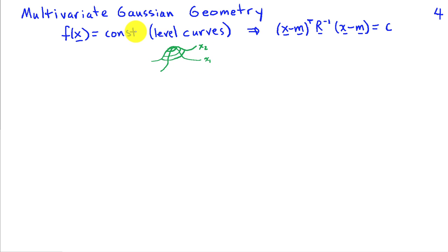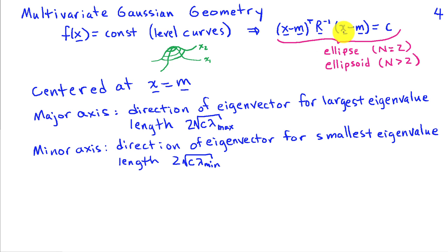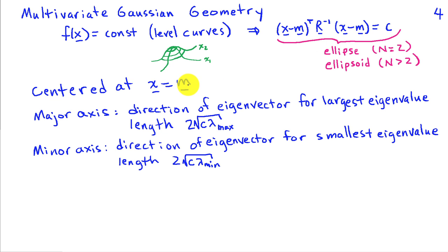Looking at the density for the multivariate Gaussian, the part that depends on x is in the exponent. For f of x to be constant, we need (x minus m) transpose R-inverse (x minus m) equal to a constant c. This expression describes an ellipse when n equals 2, and an ellipsoid when n is greater than 2. The probability density is centered at x equals m, which is the peak value — when x equals m, the exponent reaches its minimum and the density attains its largest value.